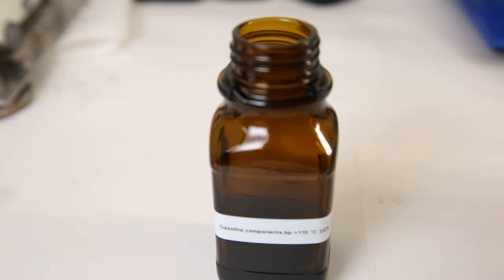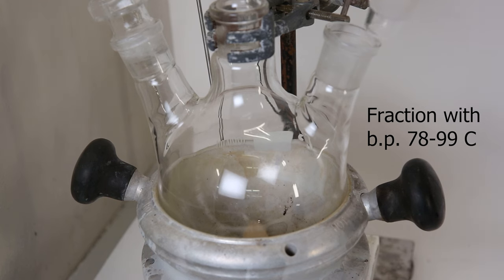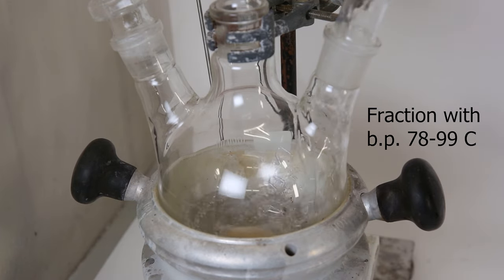Now I will redistill the fraction between 78°C and 99°C, to separate the heptane and iso-octane in the mixture from the other compounds, and get a clearer view what is in there. I put the fraction back into the flask, and started heating it again.